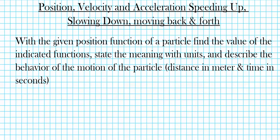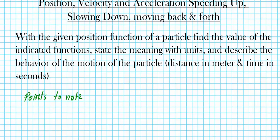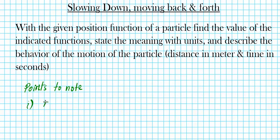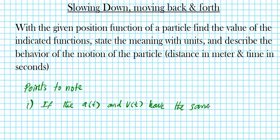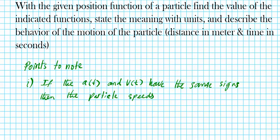Now just a few things to note before we get started with the examples. Number one is that if the acceleration a(t) and velocity v(t) have the same sign, then the particle speeds up. It's as though they're working in agreement with one another. Same signs for velocity and acceleration means that the particle is speeding up.